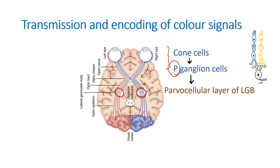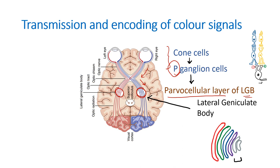The impulses reach the parvocellular layer of the lateral geniculate body. In the LGB there are six layers: the first two are called the magnocellular layer, and the remaining four are called the parvocellular layer. Color vision is a function of these last four parvocellular layers. From the lateral geniculate body, impulses are then sent on to the cortex.